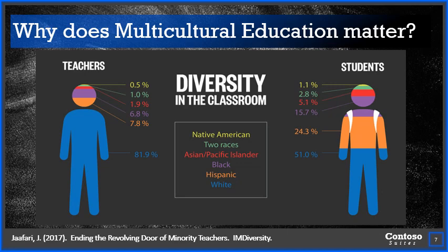24.3 percent of students were Hispanic, while only 7.8 percent of teachers were. Black students made up almost 16 percent of all students, but only about 7 percent of all teachers were Black. Asian and Pacific Islander students accounted for just over 5 percent of the population, but not quite 2 percent of the teachers were from that ethnic group. Native Americans and those persons of two races made up almost 4 percent of the student body population, but only 1.5 percent were teachers representing this group.